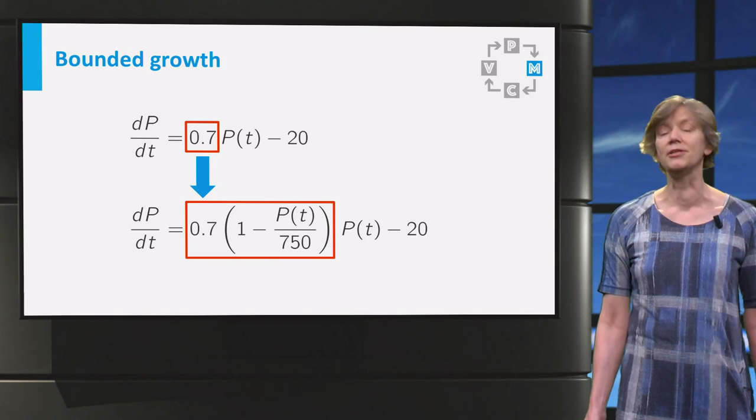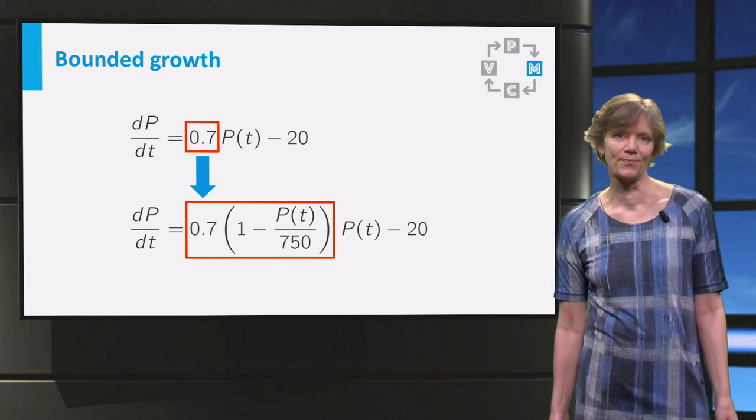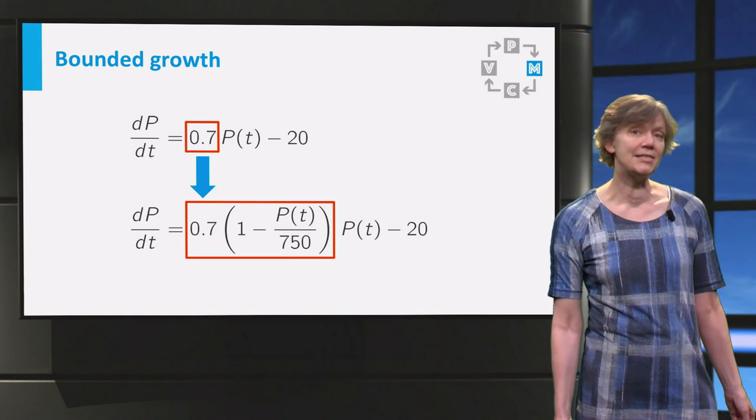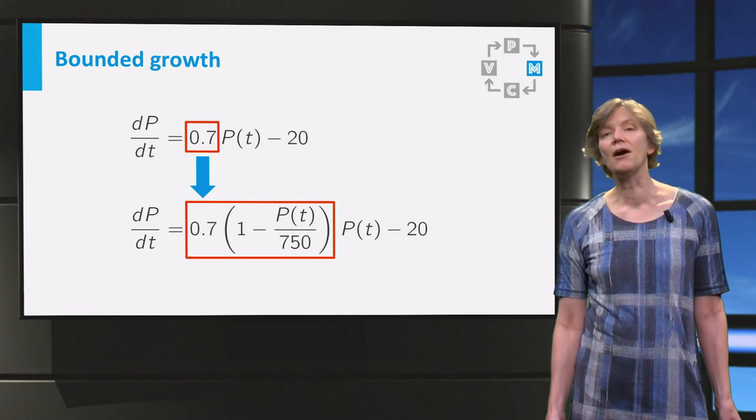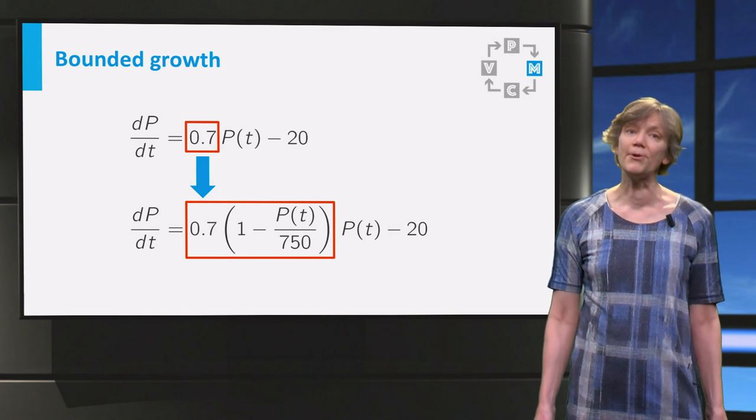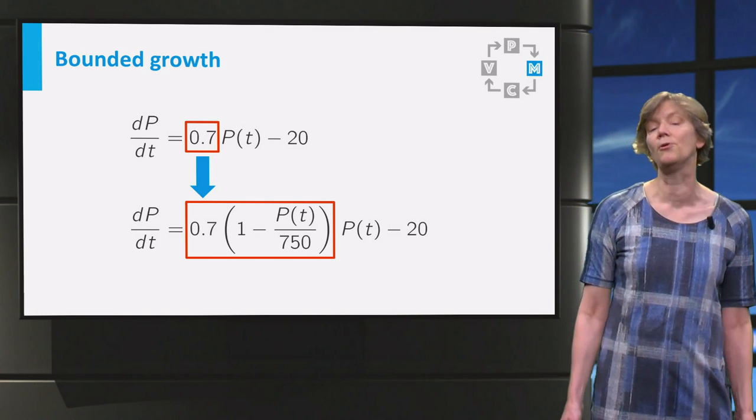When P grows, the growth rate becomes smaller. When the aquarium is almost filled to the capacity of 750, P over 750 is almost 1 and the growth rate has decreased to almost 0.